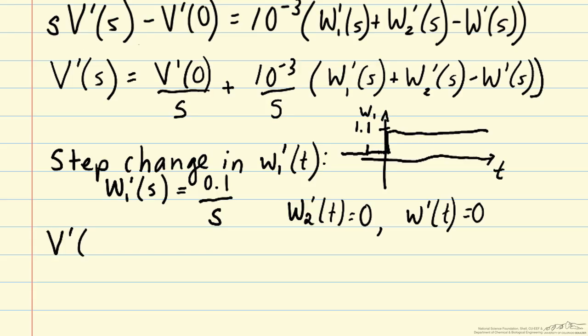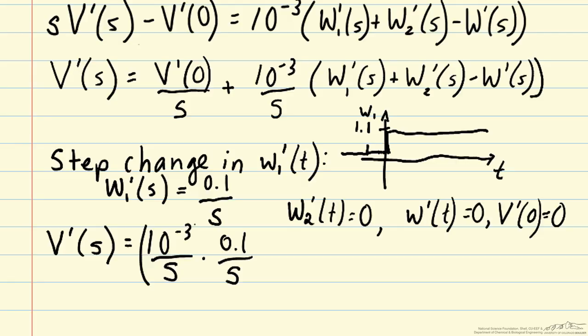So now we can solve for v prime of s. We will also assume no deviation in volume from steady state. So v prime of s then is just 10 to the minus 3 over s times 0.1 over s. So this first term here represents the effect of w1 on v, and so it's sometimes called the transfer function. But we can now combine these terms to get 10 to the minus 4 over s squared.